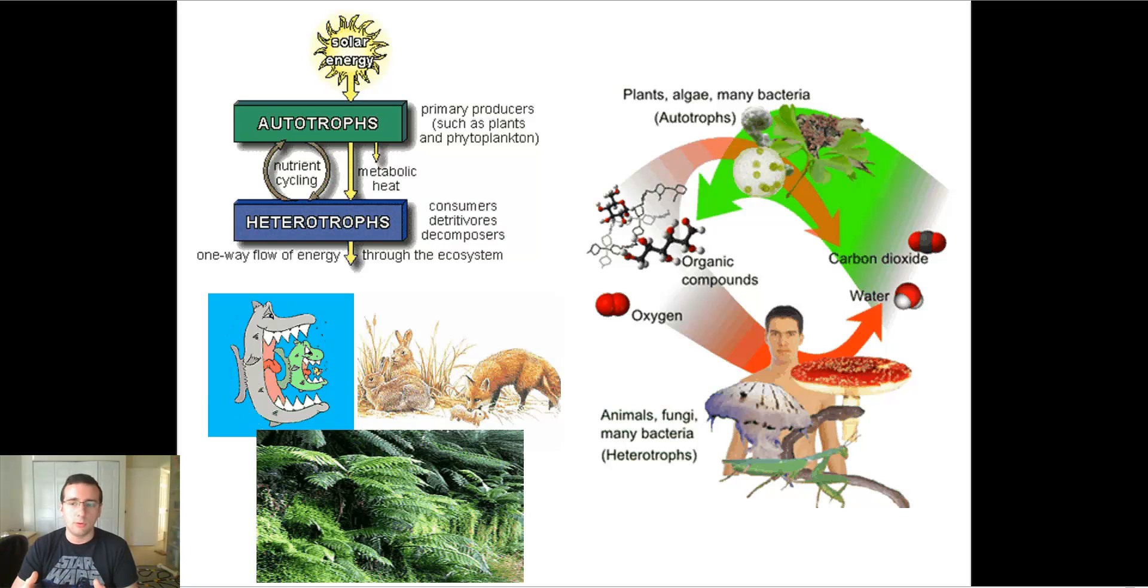You may have heard before of the word producer. Producers are these organisms that are capable of doing that, of capturing the energy of the sunlight. Another term for that is autotrophs. Troph means to eat. Auto means self. So autotroph is somebody that eats by itself. It can make its own energy. An example of that would be plants and phytoplankton, such as algae or cyanobacteria.